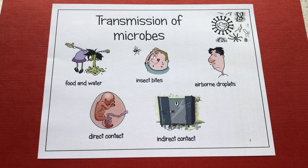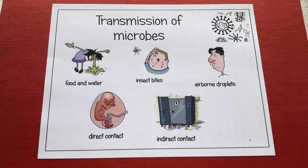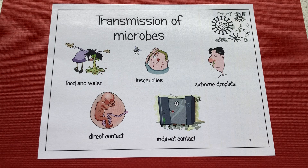This is a Year 8 microbes video. We're looking at how microbes, or as we've now started to call them, pathogens, can be spread. You can see from the pictures here we've got transmission through food and water. That could be from undercooked foods such as chicken, which can cause salmonella, which is food poisoning.